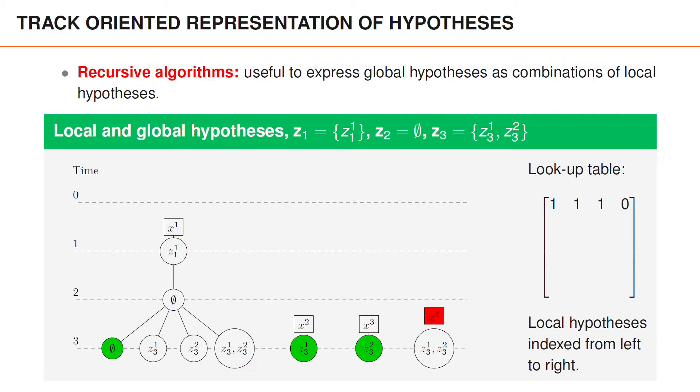One global hypothesis is the combination of the local hypotheses marked in green, which can also be expressed as 1, 1, 1, 0 by indexing local hypotheses from left to right. The other global hypotheses are as illustrated in these figures.